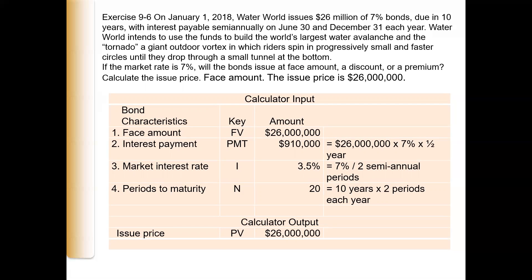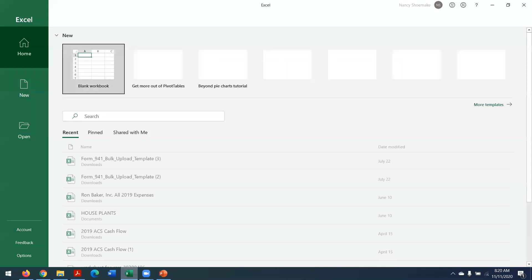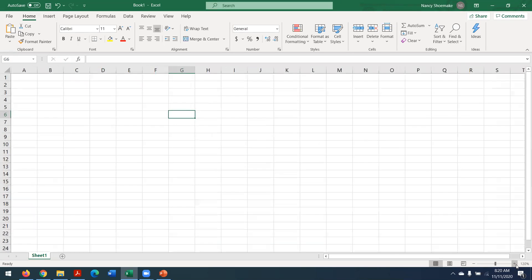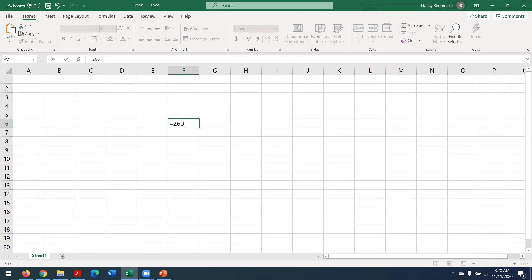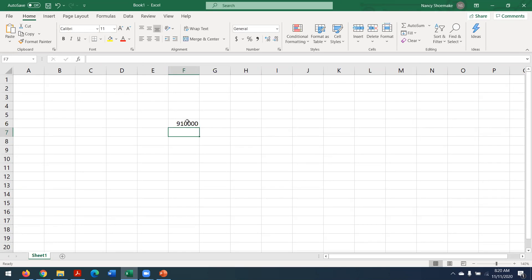In this case, if the market rate is the same as the stated rate, then they're going to issue at face amount. We can figure this out: the $26 million times every payment would be 3.5%, so $26 million times 3.5% means the payment every six months would be $910,000.